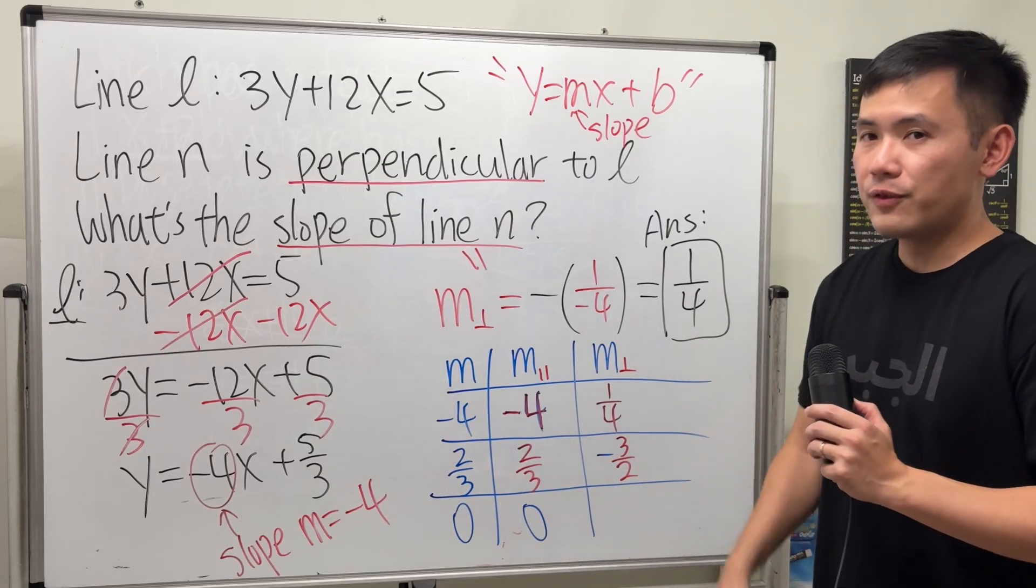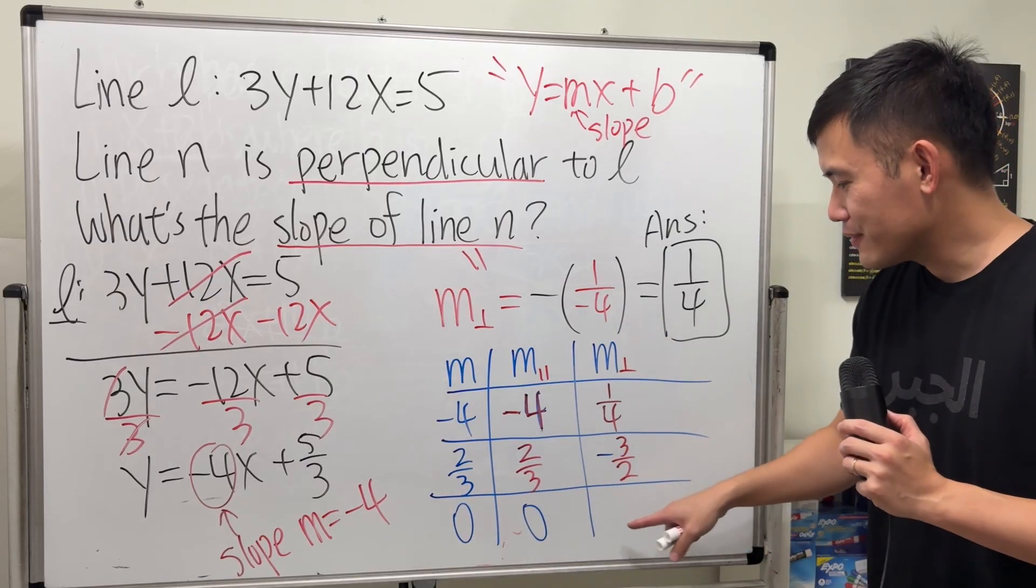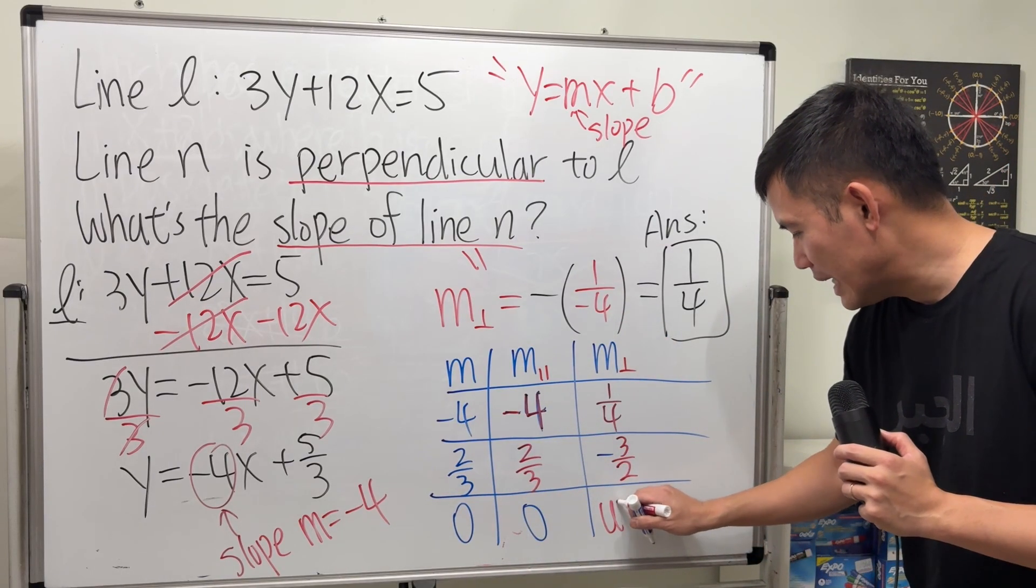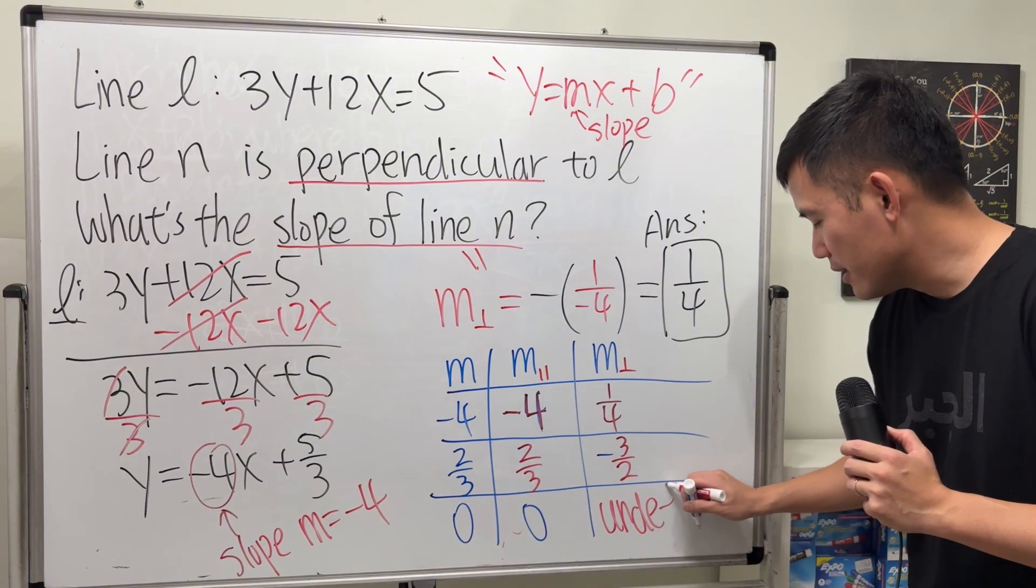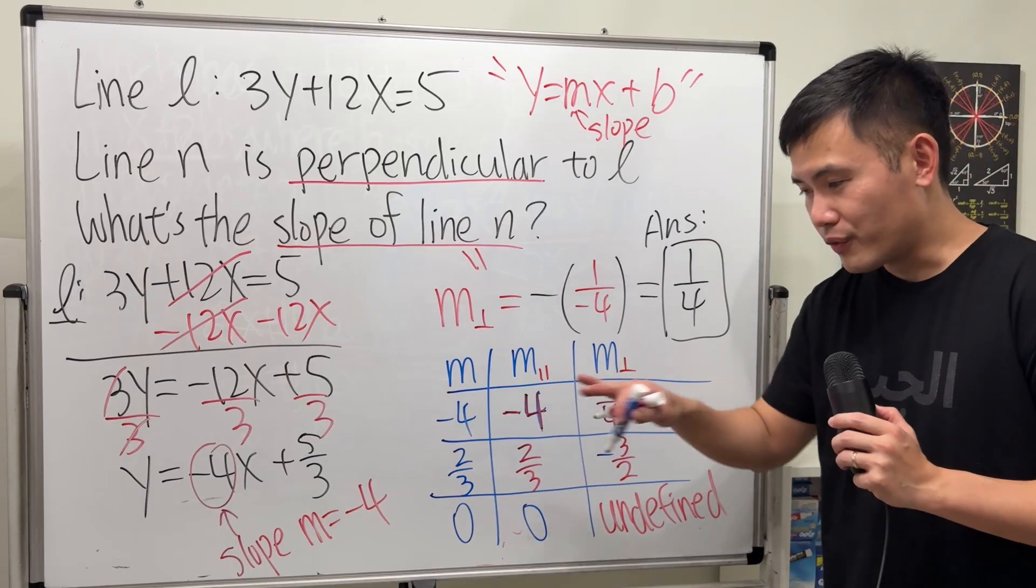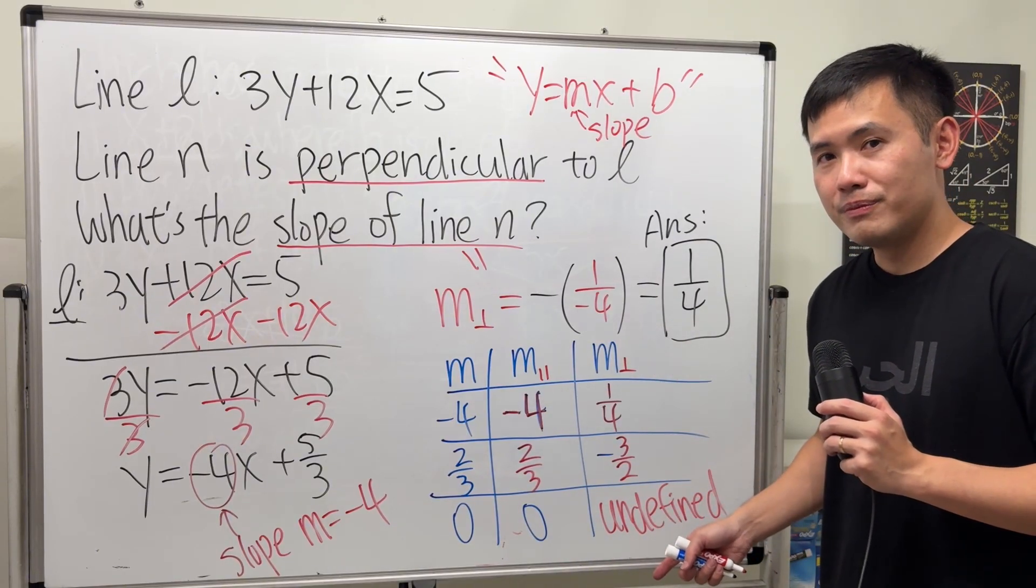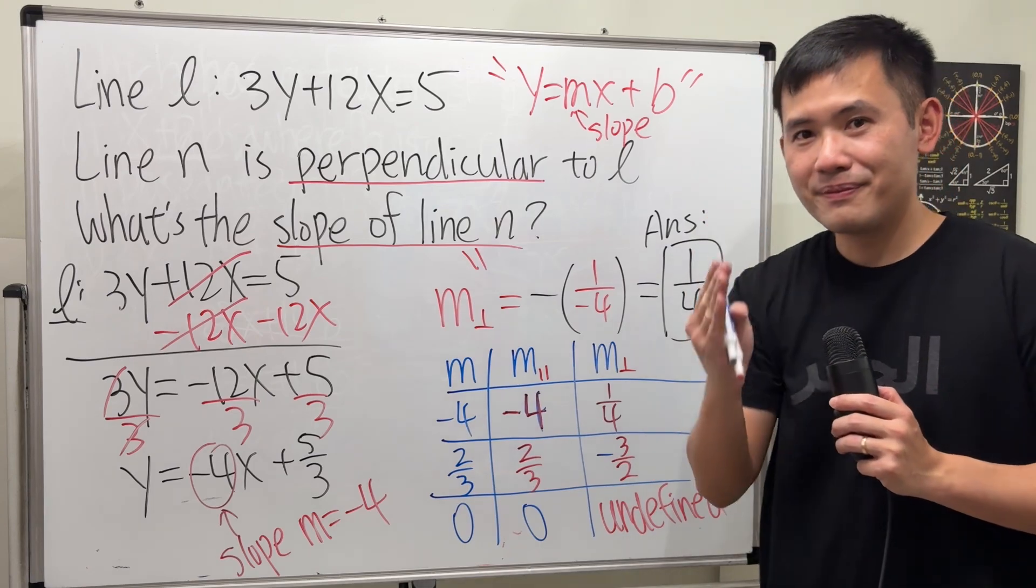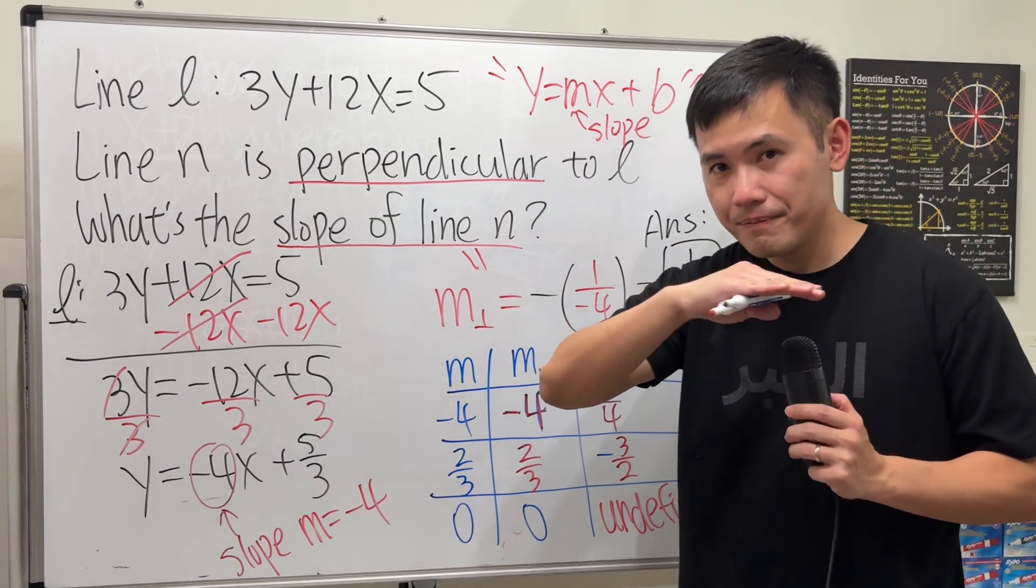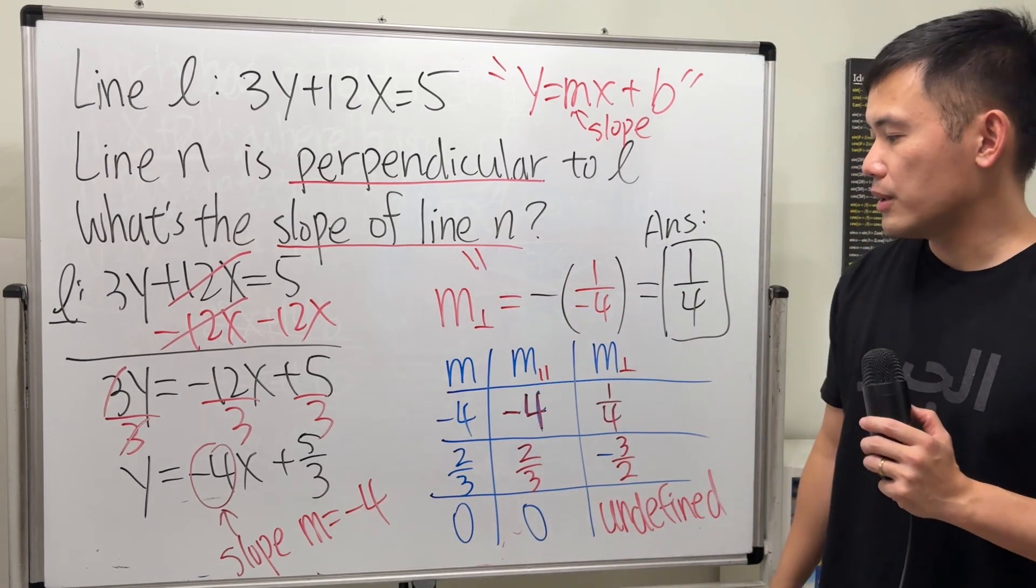But, what's the slope of the line that's perpendicular to the line with slope 0? You can also use this formula. You will have to get a 0 on the bottom, though, right? So, in fact, for this one, the answer becomes undefined. Because, we are doing, like, negative 1 over 0. Over 0 doesn't work. What kind of slope have undefined slope? The answer is vertical line. Horizontal line is perpendicular to vertical lines. They are perpendicular to each other.